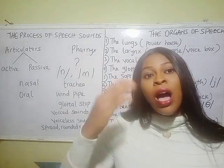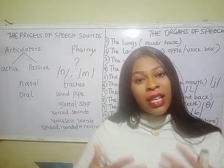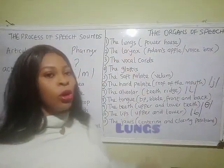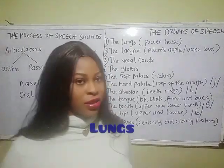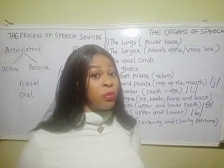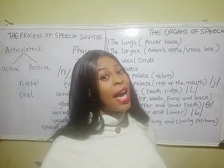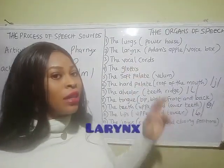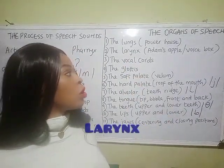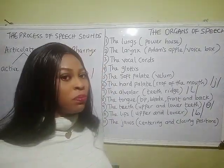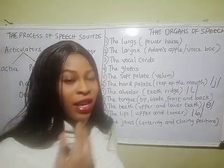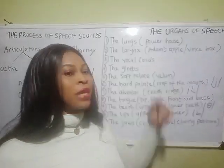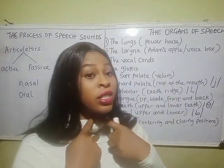Now let's look at the organs of speech and how we articulate sounds and speak. The first one is the lungs. The lungs are like two bags in the chest, also called the powerhouse because that is where the air comes from. The air then moves to the larynx. The larynx is the second organ of speech, also called the voice box, because air is modulated in the voice box. Most people call it the Adam's apple because it's like a bony structure in the throat.